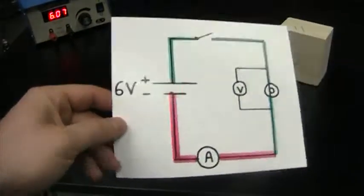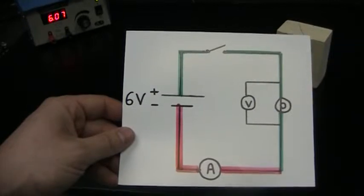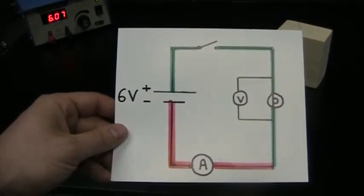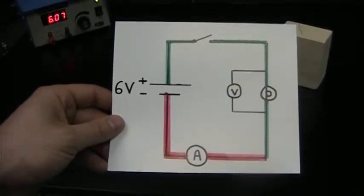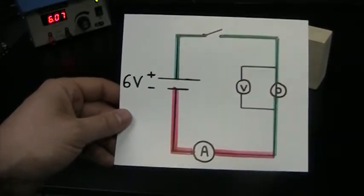So we're going to start with one of the simplest circuits that we can do: a six volt battery, in this case a power box, a light switch or just regular switch, a light bulb, and an ammeter, finally with a voltmeter going around the light bulb.